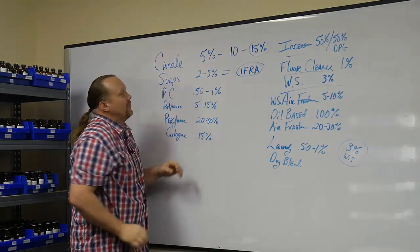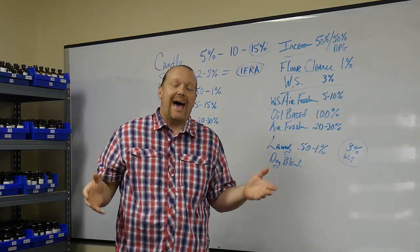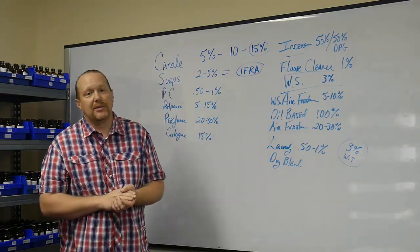Soaps. Soaps, usually 2 to 5%. That's a good place to start. You don't want to go past that. You will start running into some issues.